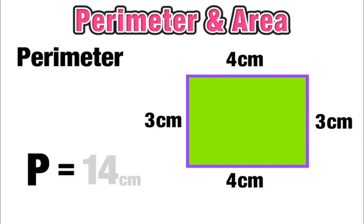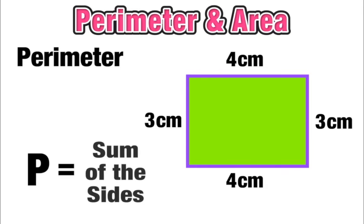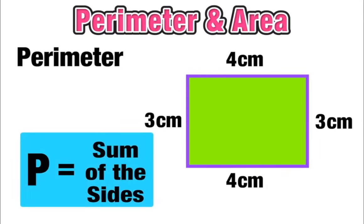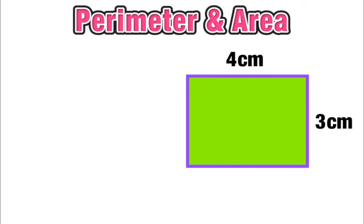This works for any rectangle, so we can say that the perimeter of any rectangular figure is equal to the sum of all the sides. All that means is you take all the sides and add them up.